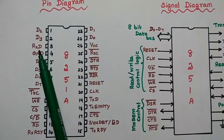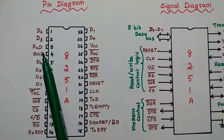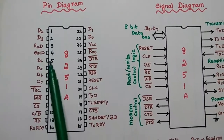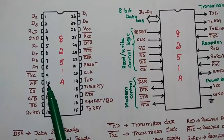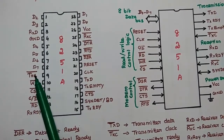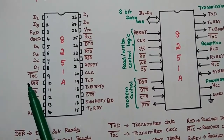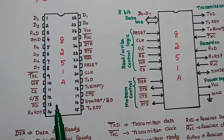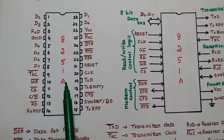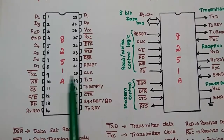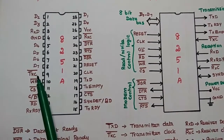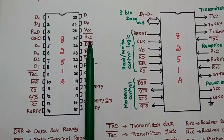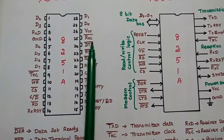The third pin is RXD, which means receive data. The fourth pin is the grounded one. The ninth pin is TXC bar, that is the transmitter clock. The 8251A has separate clock signals for the transmitter and receiver — TXC represents the transmitter clock, and RXC represents the receiver clock.